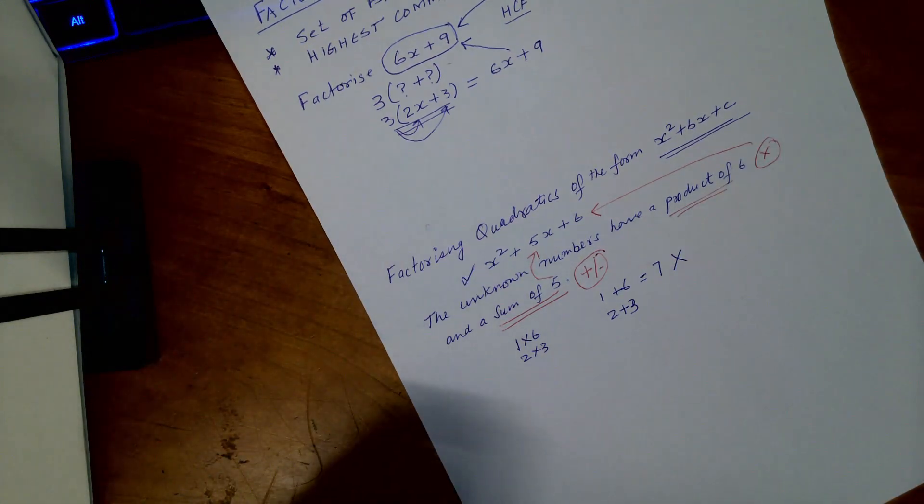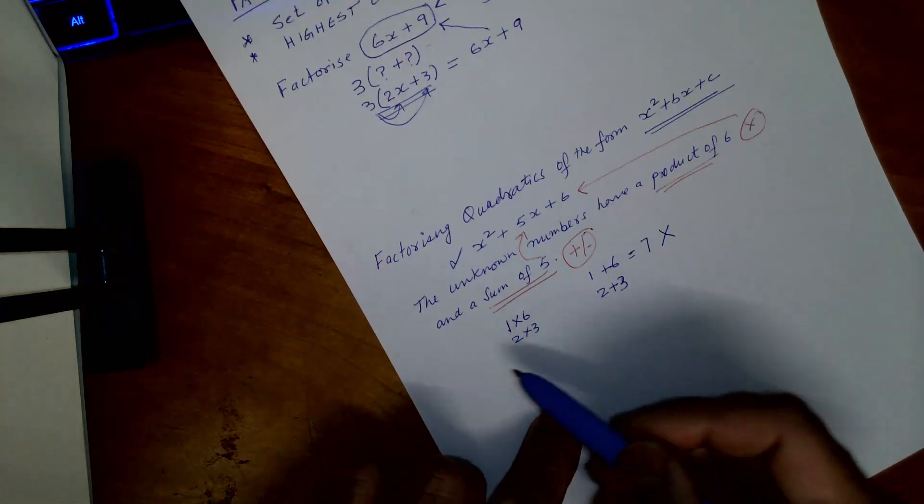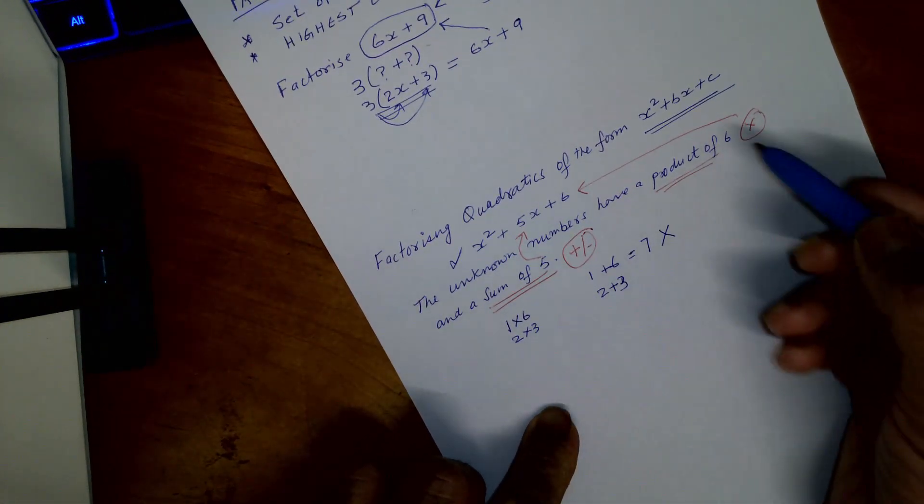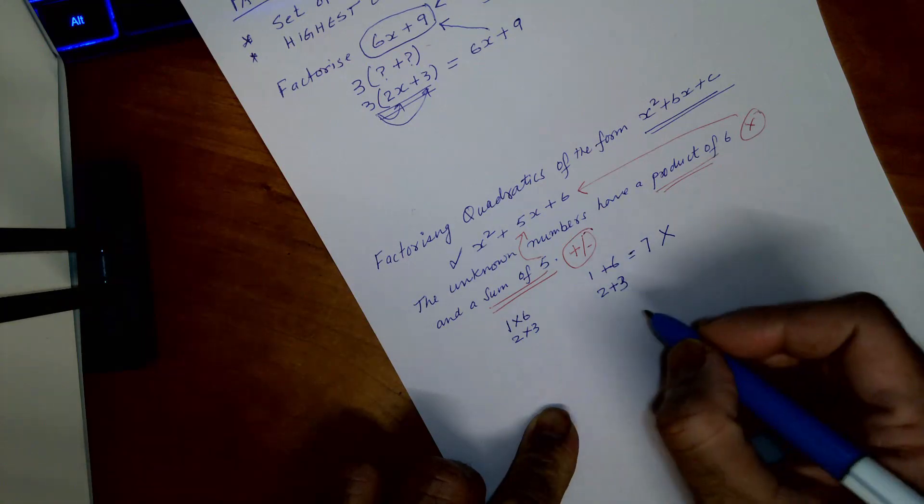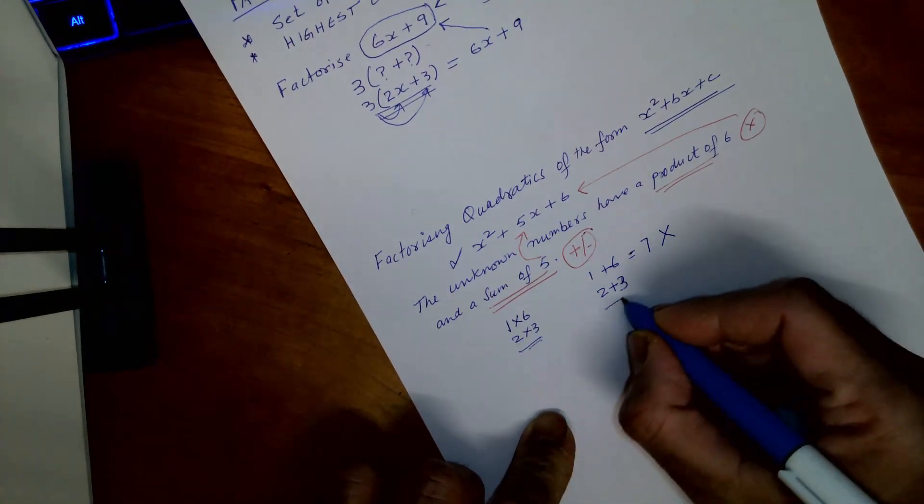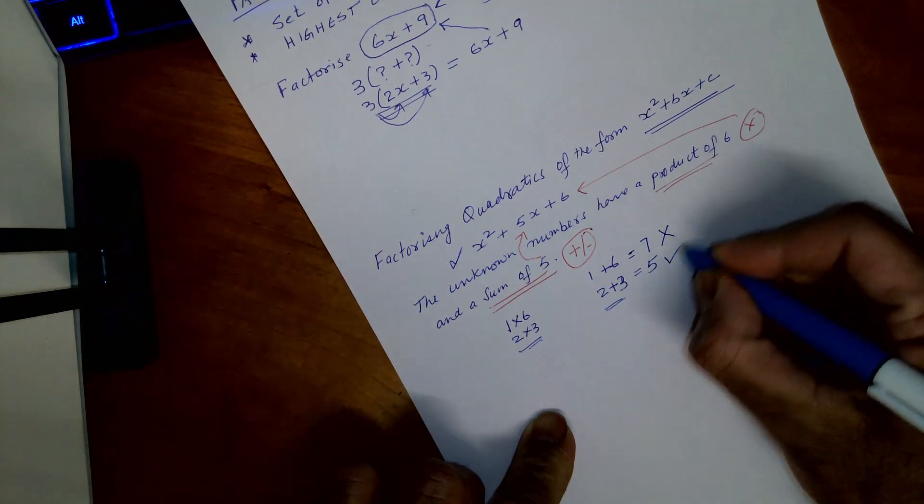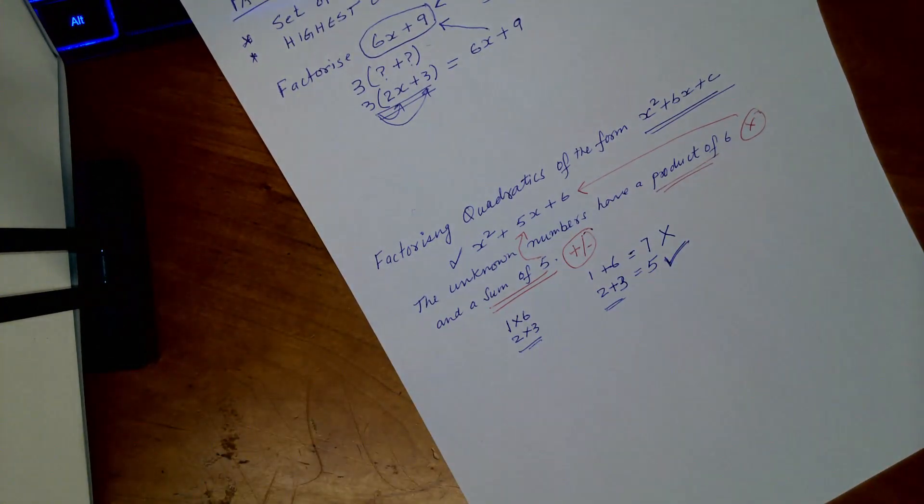Then another possibility we have is 2 multiply 3 which gives us 6, and also when we add this, that gives us 5. So we will go with this.